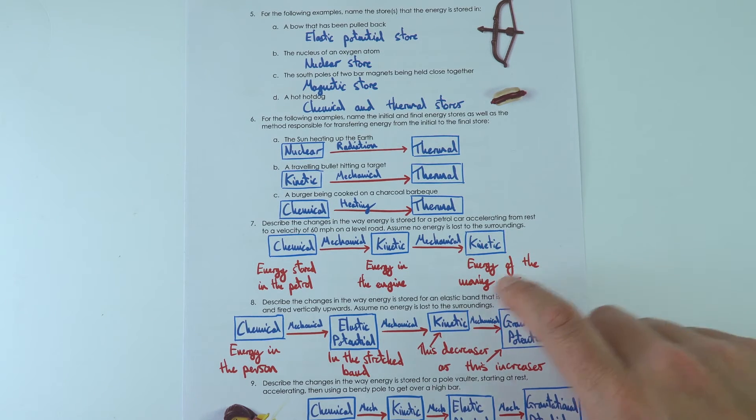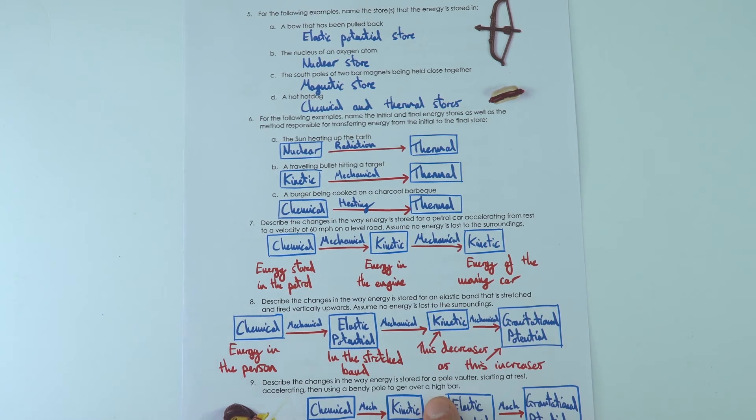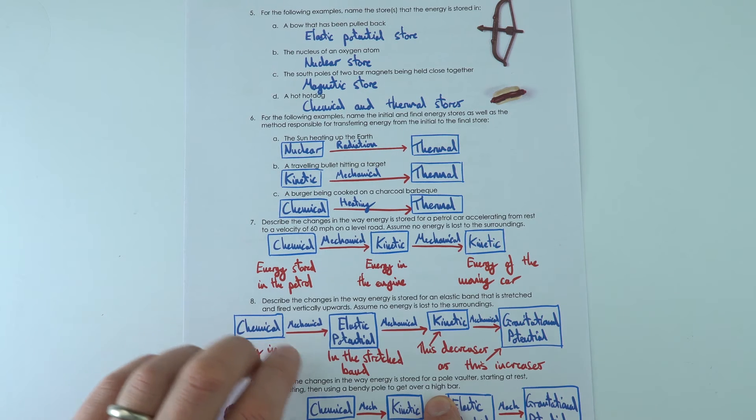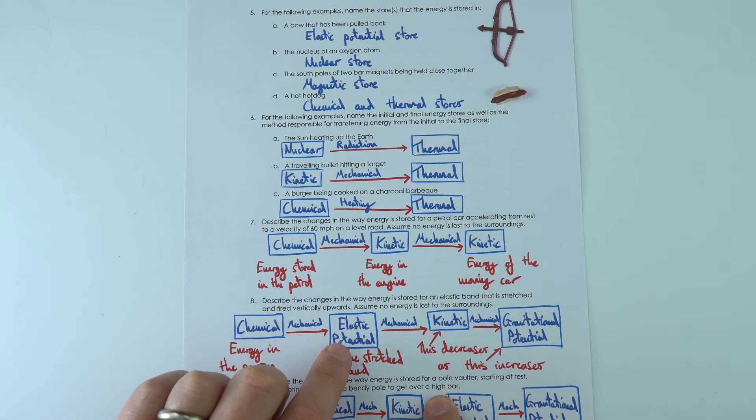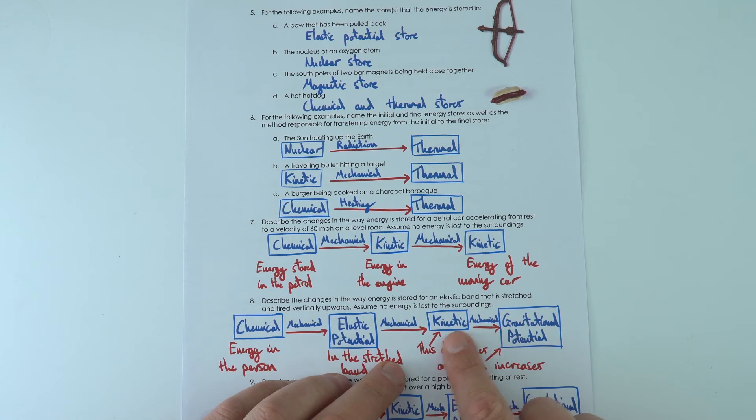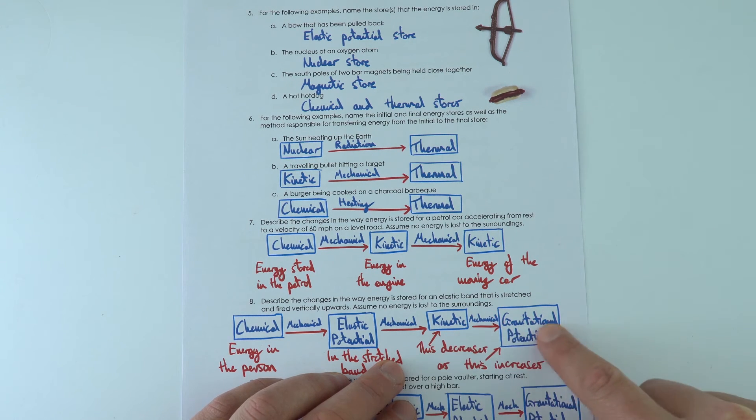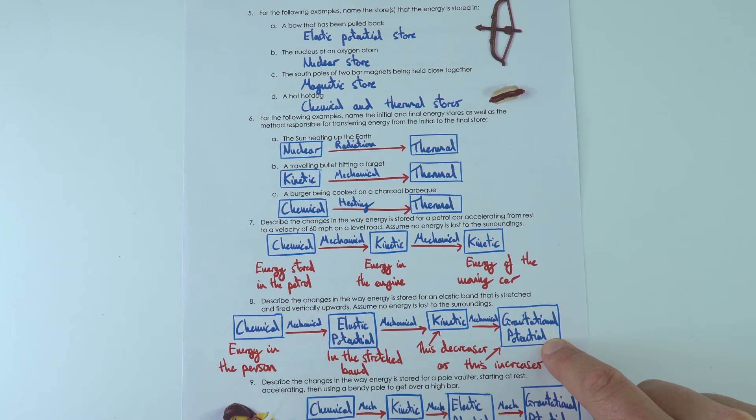We then have an elastic band being stretched, and I went from the chemical energy in the person to the elastic potential energy stored in the band, and then as soon as it starts going vertically, the kinetic energy store that it has, that then decreases as it gets higher and higher, and its gravitational potential store increases.